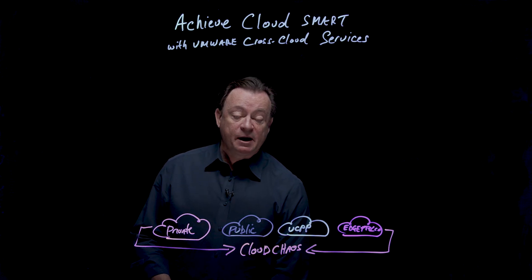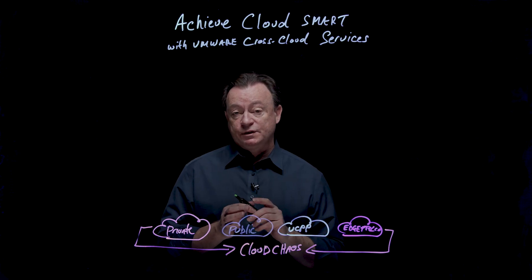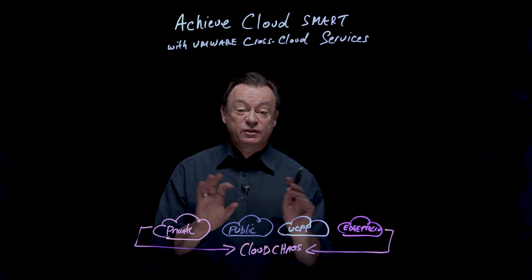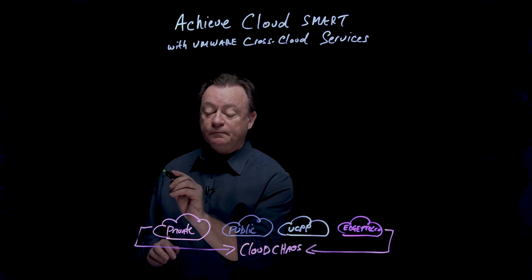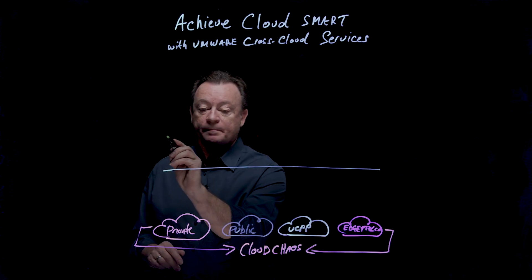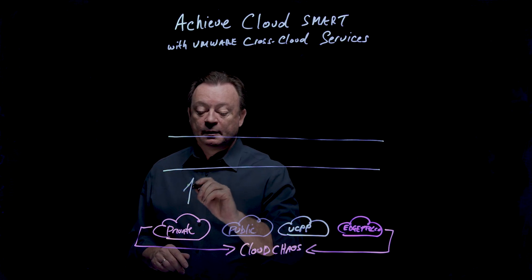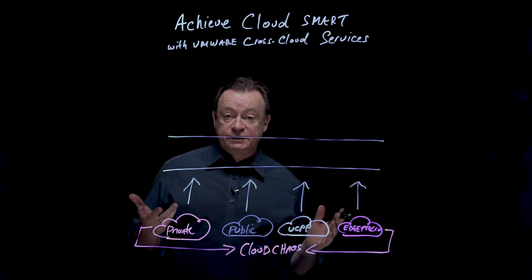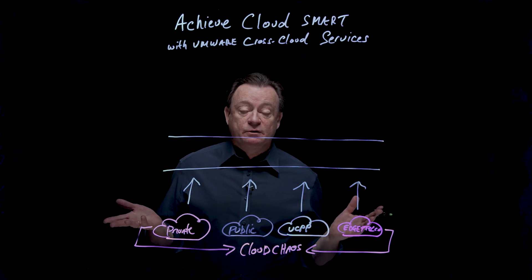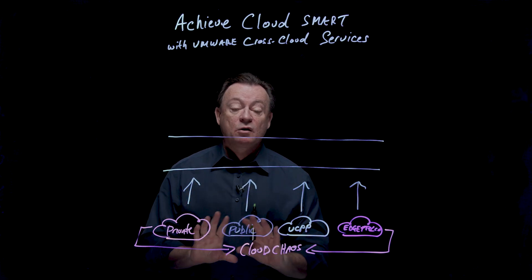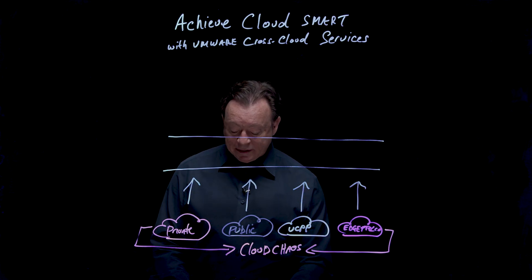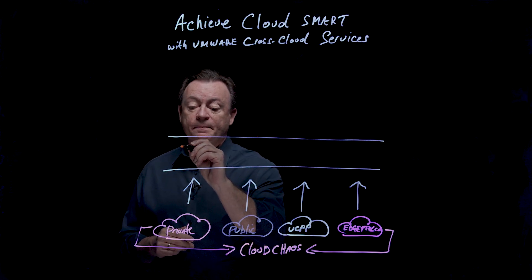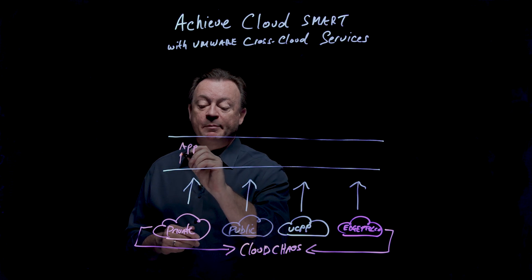We start by introducing the cross-cloud services portfolio. Think of it as an abstraction layer across the complete cloud landscape. You're familiar with abstraction as we introduced this with virtualization — this is a new chapter of abstraction, but now across the multiple clouds you may have. So what's in this abstraction layer? This is where our cross-cloud services live.